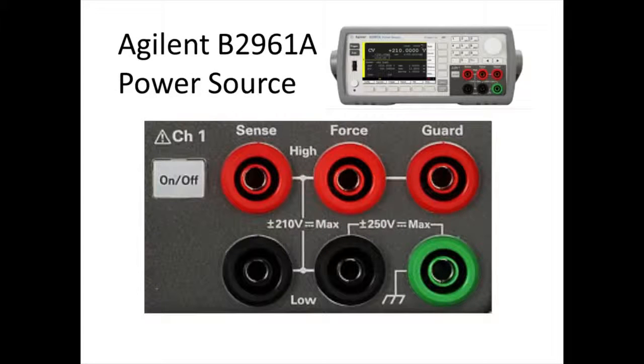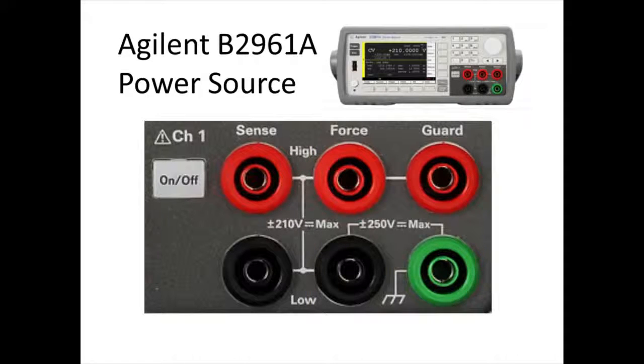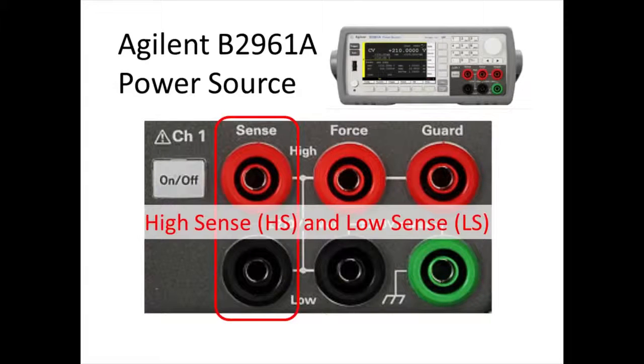This is an enlarged view of an output terminal panel. There are six output terminals on this panel. The force terminals are used for applying current and voltage to a DUT. Voltage and current are applied between high force and low force. When you use remote sensing, you need to use the sense terminals. Then you can eliminate the voltage drop across lead resistance and apply the voltage as expected.